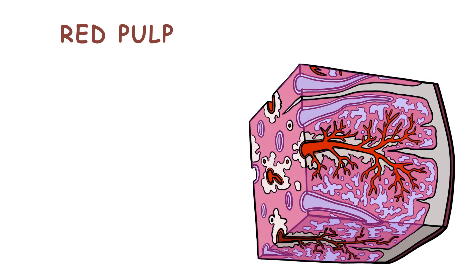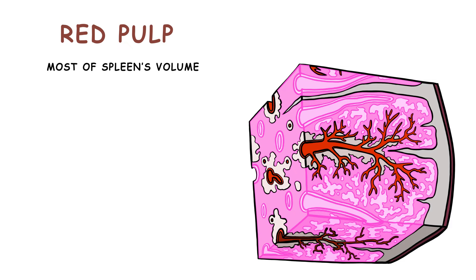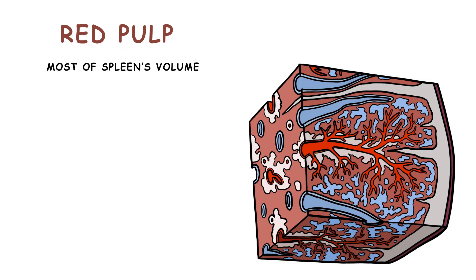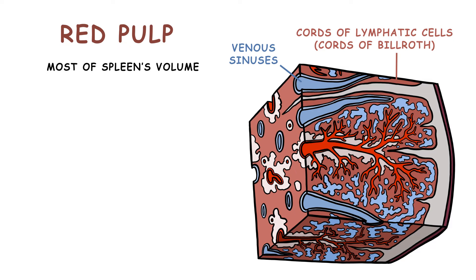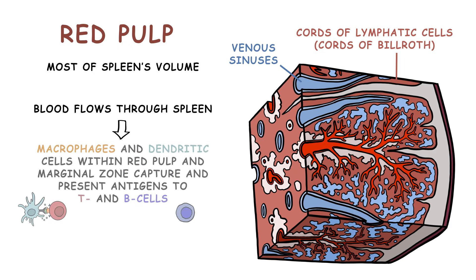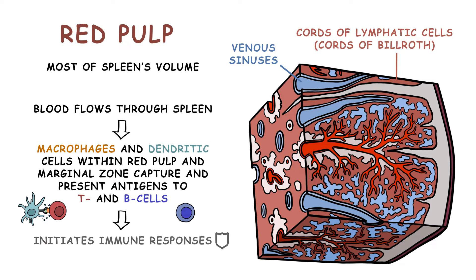The red pulp constitutes most of the spleen's volume. It consists of venous sinuses and cords of lymphatic cells, including lymphocytes and macrophages. As blood flows through the spleen, macrophages and dendritic cells within the red pulp and marginal zone capture and present antigens to T and B cells, initiating immune responses.